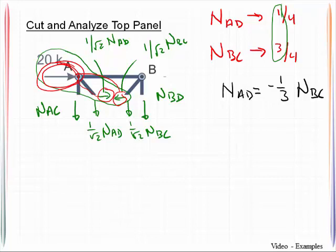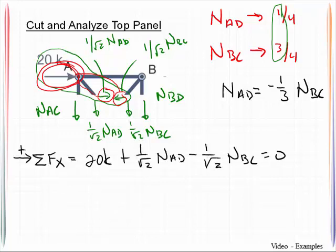So with that we can now assemble the equilibrium equations and we will do so by summing the forces in the x direction. Here's the equation for sum of forces in the x direction. You will notice that with that you have two unknowns, NAD and NBC.